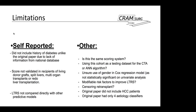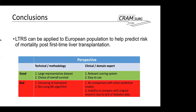In conclusion, we think the LTRS score can be applied to a European population to help predict risk of mortality for first-time liver transplantation. Obviously, as with any risk score, we shouldn't use it alone and should use it in conjunction with other clinical information. This table summarizes the things we've discussed regarding methodology and the clinical domain expert opinion. That concludes our presentation — thank you very much for listening.